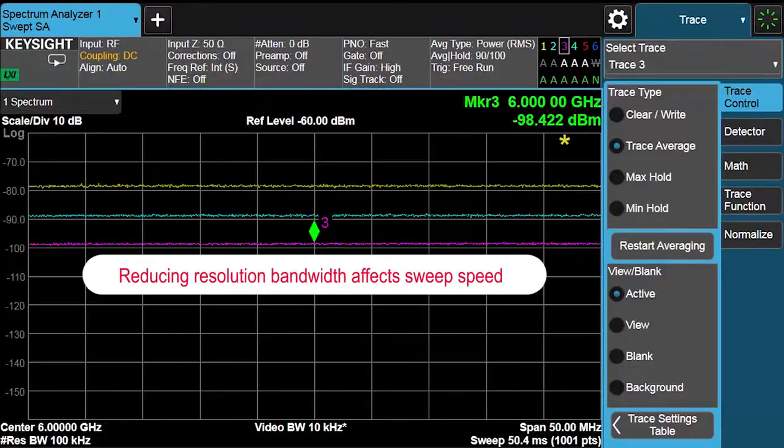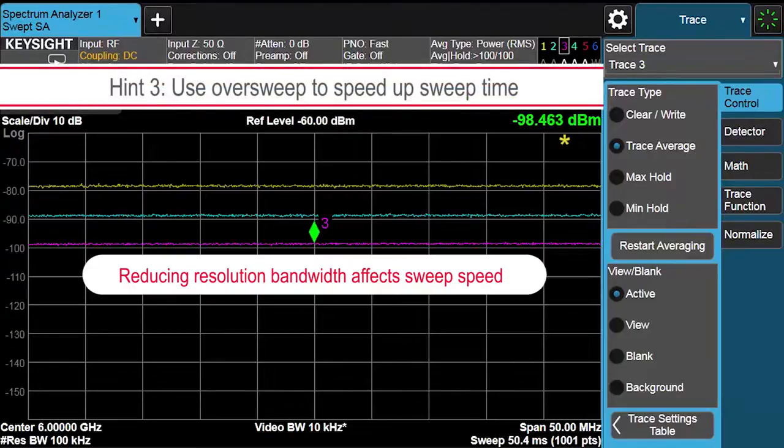Often, when you're looking for low-level spurs, it is necessary to balance the trade-offs between sweep speed and your displayed average noise level. The new fast sweep feature in the EXA allows you to lower your RBW, thus lowering your noise floor while still sweeping quickly.